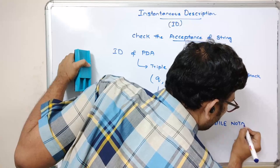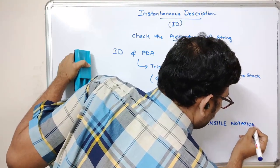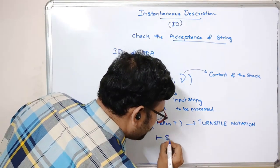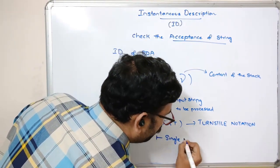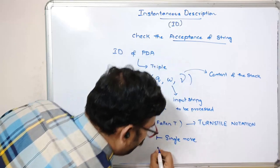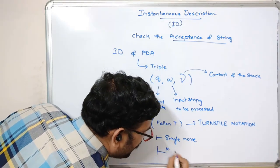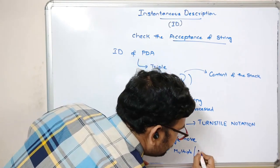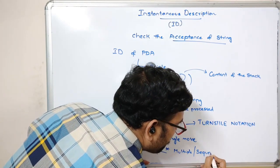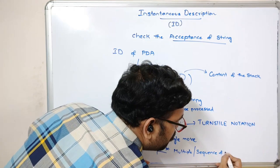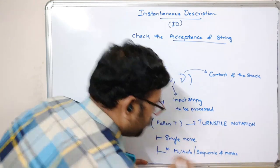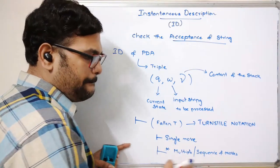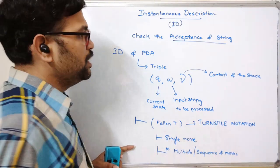This ID is represented using the turnstile notation. If it is a single turnstile symbol, it represents a single move. If the same turnstile symbol has a star, it represents multiple or a sequence of moves.